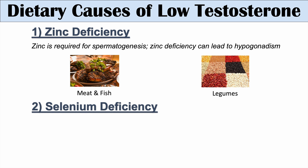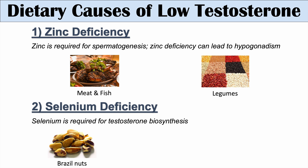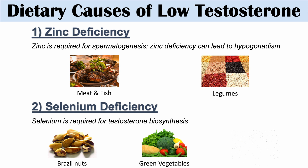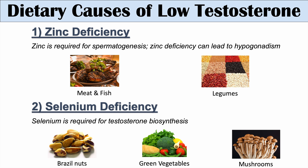The second type of deficiency that can lead to low testosterone levels is selenium deficiency. Selenium is actually required for testosterone biosynthesis — the production of testosterone. We can get selenium from Brazil nuts, green vegetables, and mushrooms.